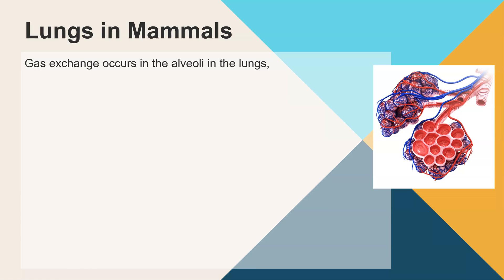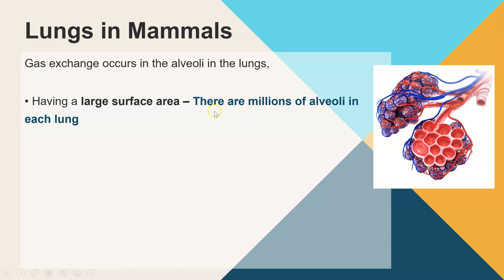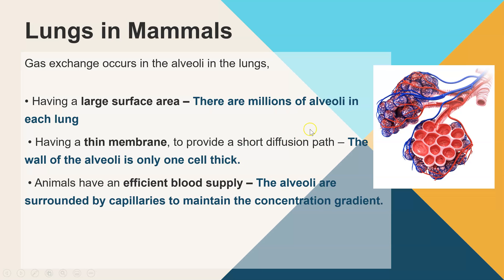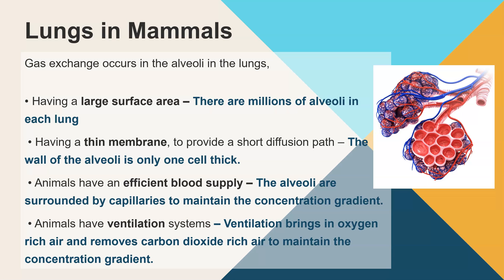In animals, the lungs — specifically the alveoli — are the gas exchange organ. A large surface area is produced by the millions of alveoli in both the left and right lungs. The thin membrane comes from the fact that each alveolar wall is very thin, made up of only one layer of cells. They are surrounded by a capillary network to maintain the concentration gradient, as oxygen diffusing from the alveoli into the capillary is transported away in the blood. The ventilation system also maintains the gradient: inhaling brings in oxygen-rich air, and exhaling removes carbon dioxide-rich gas.